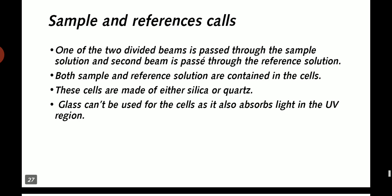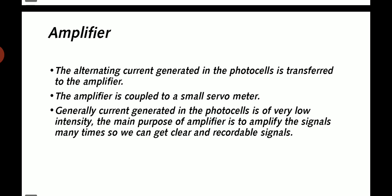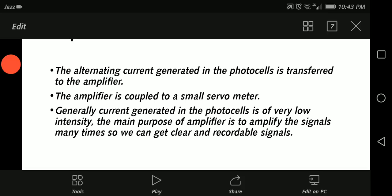Sample and reference cells. One of the two divided beams is passed through the sample solution and the second beam is passed through the reference solution. Both are contained in cells. These cells are made of silica or quartz. Glass cannot be used for the cell as it also absorbs light in the UV region.